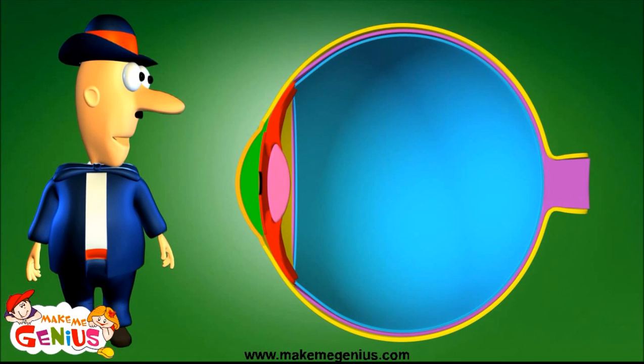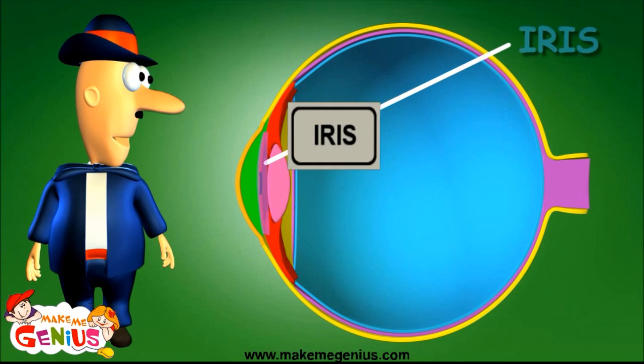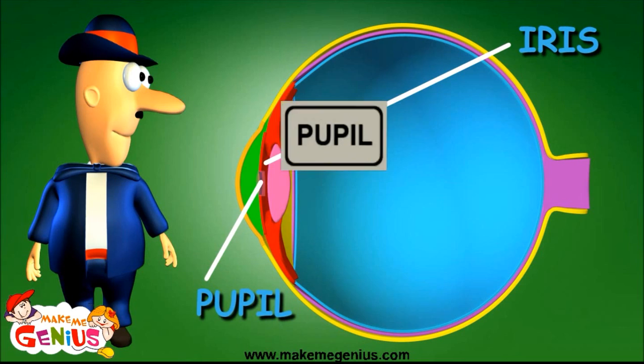Your eye is almost like a ball. The dark circle in the center of your eye is called an iris. The small black spot in its center is called the pupil.